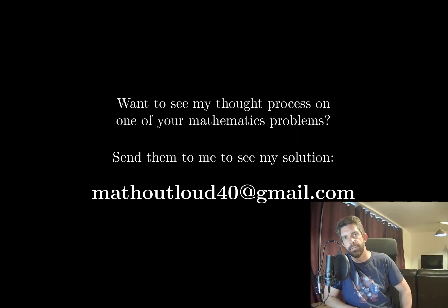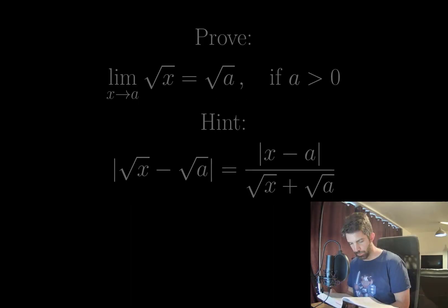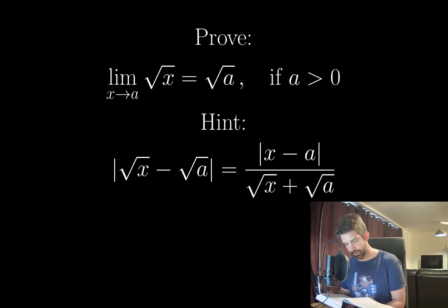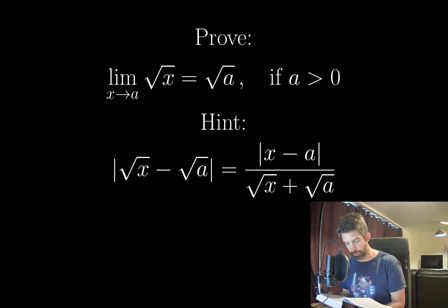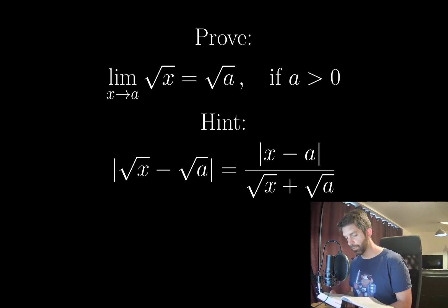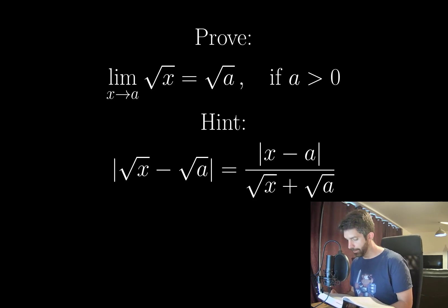Hello everyone. Let's solve another math problem. Prove that the limit as x approaches a of the square root of x is equal to the square root of a, if a is greater than zero.